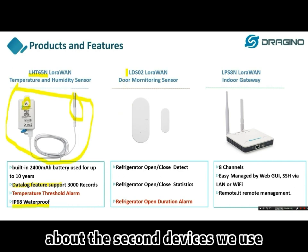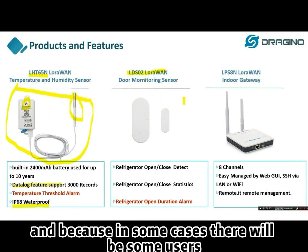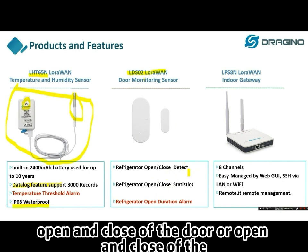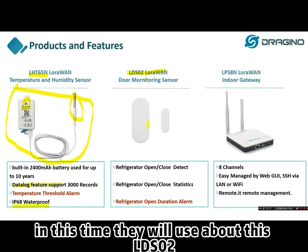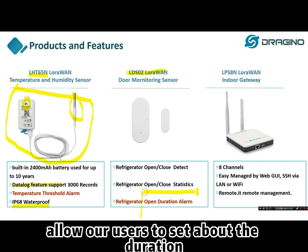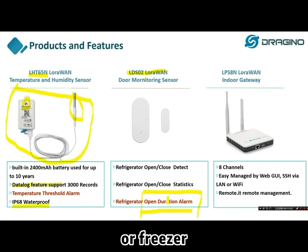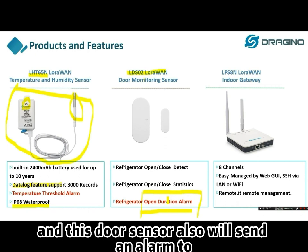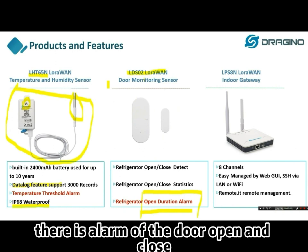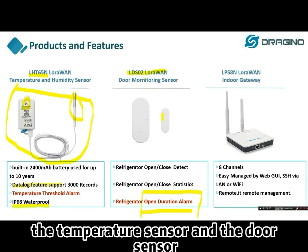Now I would like to introduce the second device: the LDS02 door monitoring sensor. This sensor is normally used together with our temperature sensor. In some cases, users need to detect the open and close status of a door or freezer/refrigerator. The LDS02 door sensor has an open duration alarm function, allowing users to set a duration threshold. When the door or freezer has been open for longer than, for example, 5 or 10 minutes, the sensor will send an alarm to the platform, user apps, and so on, notifying users of the door open alarm.